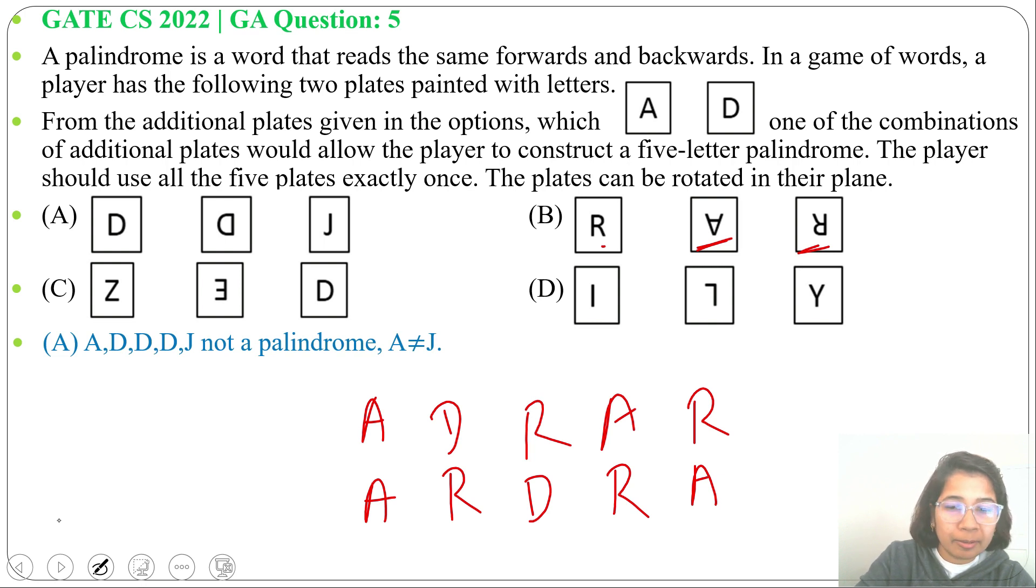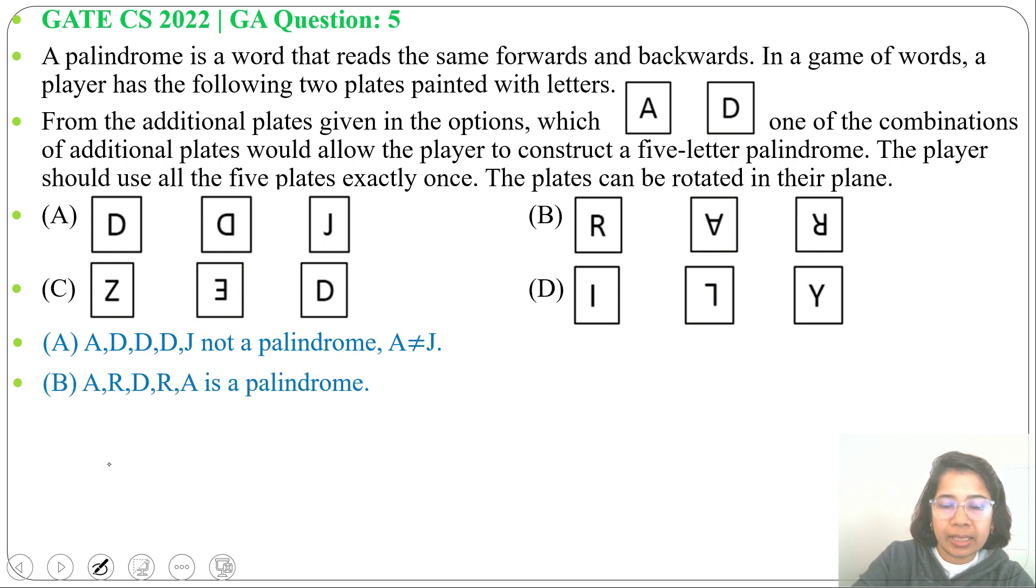We can also get another palindrome like R, A, D, A, R. So R, A, D, A, R or A, R, D, R, A. We can get two palindromes by using option B. Next option C.